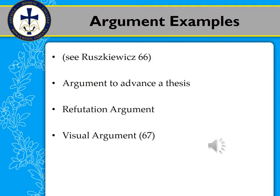At the beginning of Chapter 3 in How to Write Anything, you can see some examples of types of arguments you might need to write. The two we're going to focus on here are Argument to Advance a Thesis and a Refutation Argument.